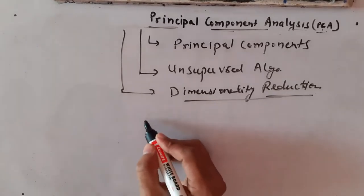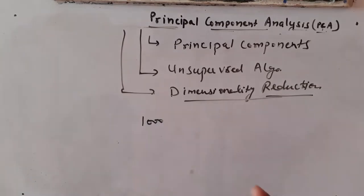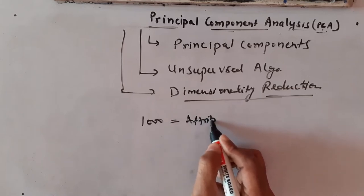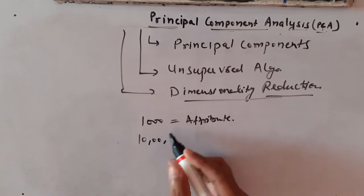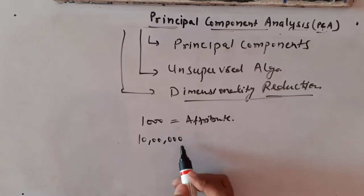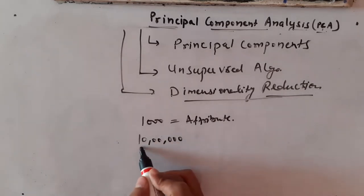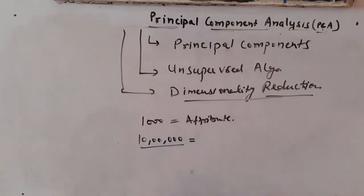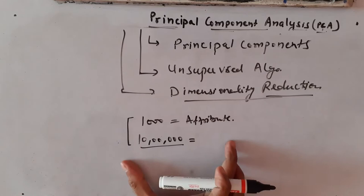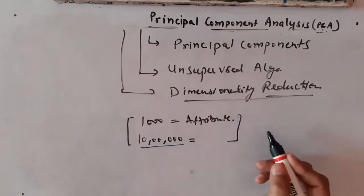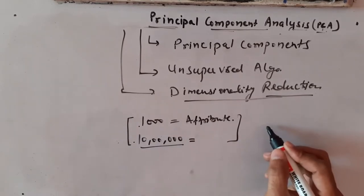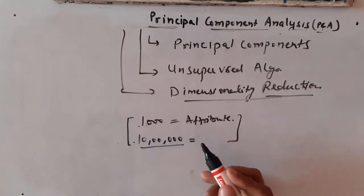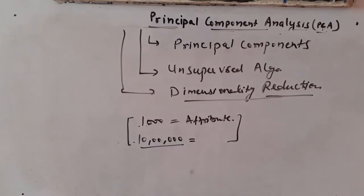When I say dimensionality reduction, assume that in the real world we have huge datasets. Assume that we have a dataset of, let's say, 1000 attributes, and there are a total of 10 lakh records. You can think of how computation-intensive it will be — 10 lakh records multiplied by 1000 attributes is a very big, highly computation-intensive thing.